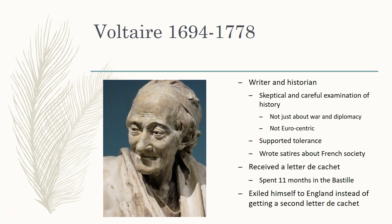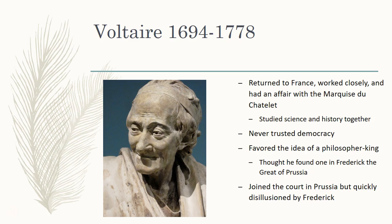Despite being accepted in England, he was still not the biggest fan of England, and in fact he returned to France after things calmed down over some years. There he worked very closely with a married noblewoman, the Marquise du Châtelet. She acted as both the patron of Voltaire and his lover — they were together for quite a number of years. He would live with her on her husband's estate, which featured a massive library, and there they were able to study together many different subjects, including science and history.